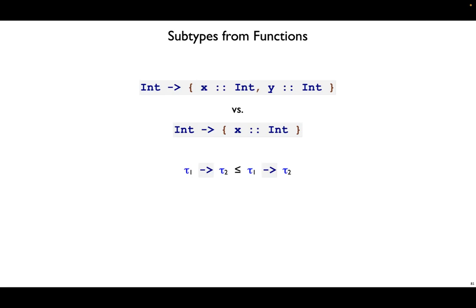This application would get rejected, and that's because our subtyping relation is looking for an exact match between tau1, tau2 on the left, and tau1, tau2 on the right. We'll need to revise the rule, and now we'll say that one function is a subtype of another if the return types, tau2 and tau2 prime, are in the subtyping relation. They don't need to be exactly equal, but they do need to be connected by subtyping.